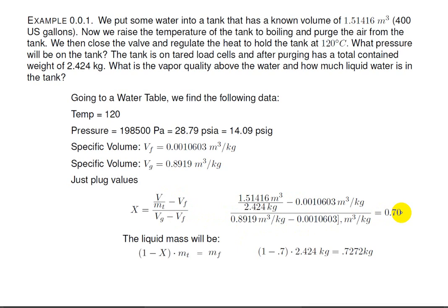Now the question asked, what's the vapor quality above the water? We got that. And how much liquid water is in the tank? As for how much liquid water is in the tank, we can use this equation. 1 minus the fraction times the total mass is the amount of liquid in the tank, the mass of the liquid. So that's 1 minus 0.7 times 2.42, or 0.727 kilograms, which is only 727 milliliters.